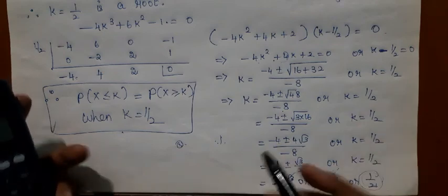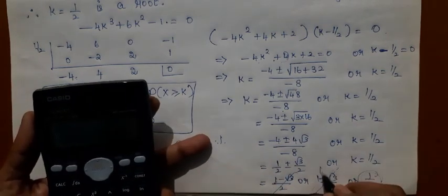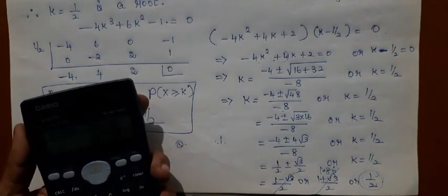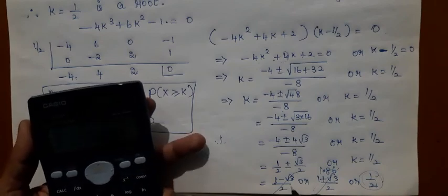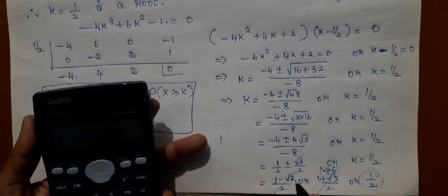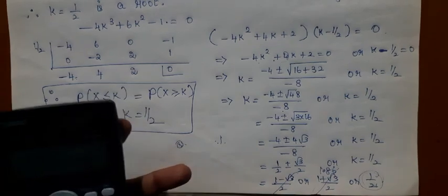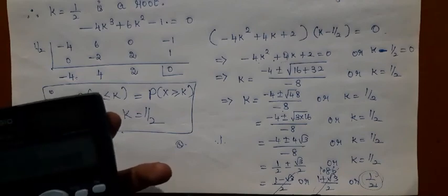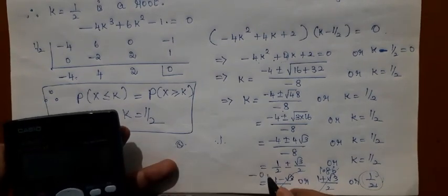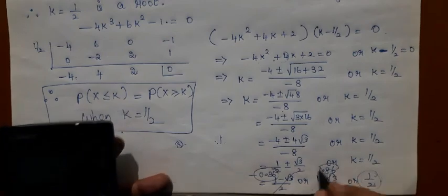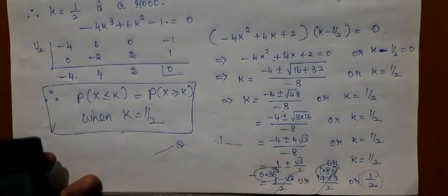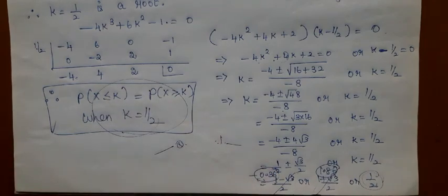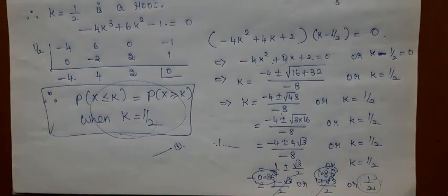To verify: (1 plus root 3)/2 becomes approximately 1.86, and (1 minus root 3)/2 becomes approximately minus 0.36. These two values lie outside the valid range 0 to 1, so they cannot be accepted. Therefore, we take K equals 1/2. We have found the value of K. Thank you.